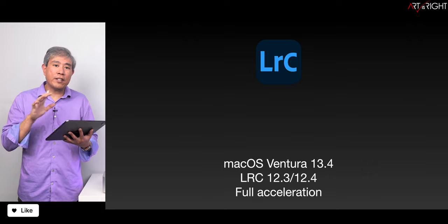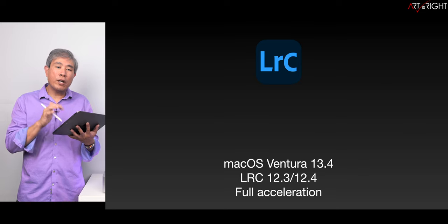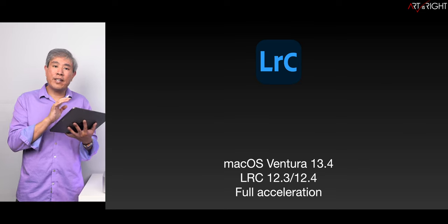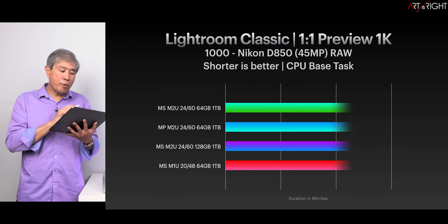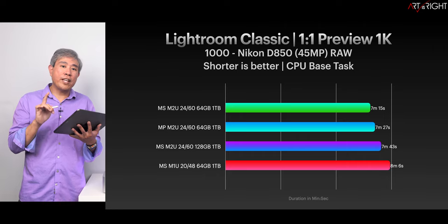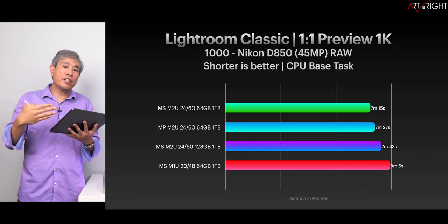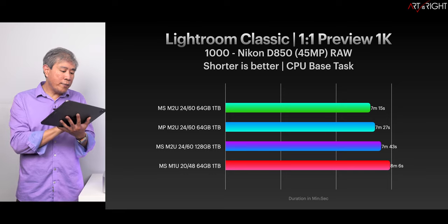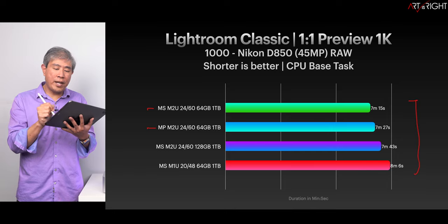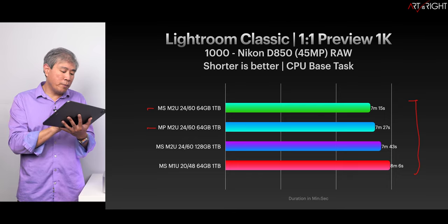Now let's take a look at results from Lightroom Classic. All tests are running on Ventura 13.4. I tested versions 12.3 and 12.4 of Lightroom Classic and the import and export times are identical. Looking at results for 1,000 Nikon D850 RAW files: the Mac Pro is just slightly slower than the Mac Studio. All these machines are literally between 10 and 15 seconds apart, which I would say is still within the margin of error.